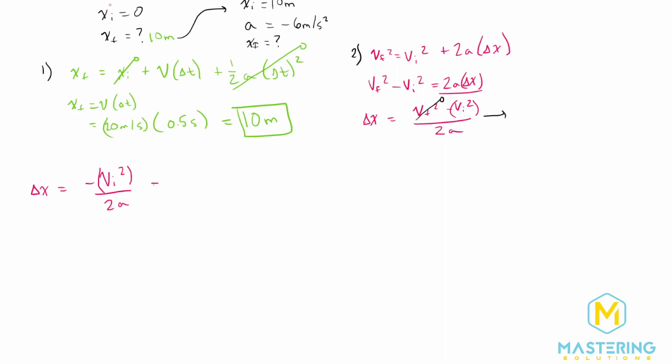So now when we plug in our values, we have a negative v initial for this section is going to be 20 meters per second. And we'll square that whole value, because this is just where she barely starts to hit the brake. So she's still technically going at 20 meters per second.